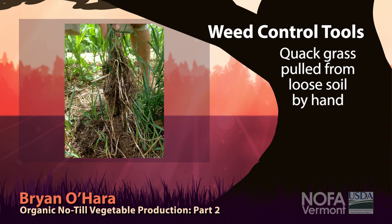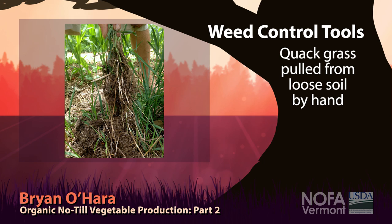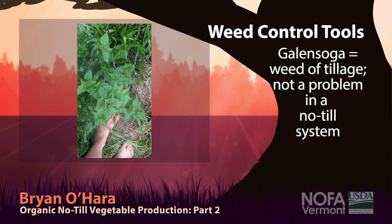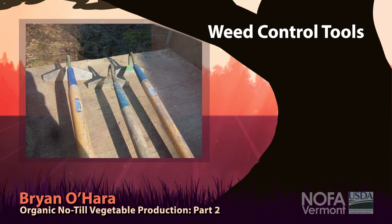Quack grass — I left this patch growing to demonstrate that in a properly aggregated soil, you can simply reach into the soil and the quack grass just pulls right out, because the soil is not a compacted brick. It is a living, breathing, aggregated soil. Galinsoga used to be our arch-enemy — billions growing in our fields. Once we switched into a no-till system, we barely ever see it, because it's a weed of tillage and the soil will not signal it to grow in the new environment.